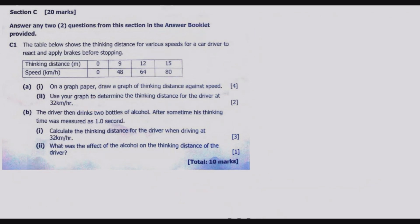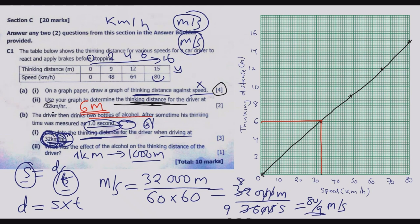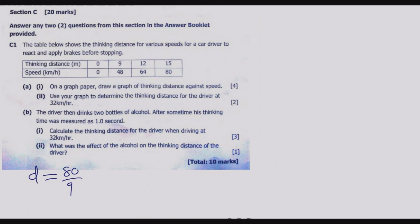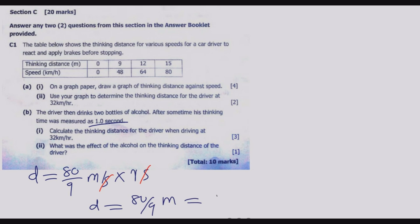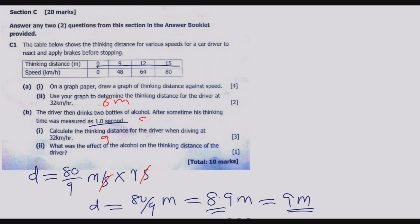So distance equals 80/9 meters per second multiplied by 1 second. The seconds cancel, leaving distance equals 80/9, which is approximately 8.9 meters, or rounded to one significant figure, 9 meters. So the thinking distance for the drunk driver at 32 km/h is 9 meters.